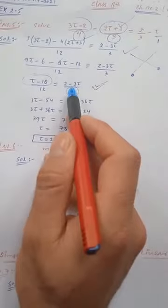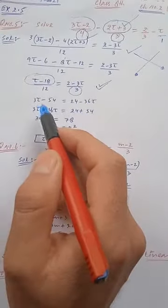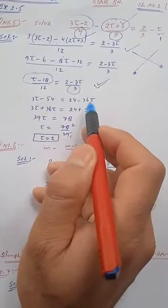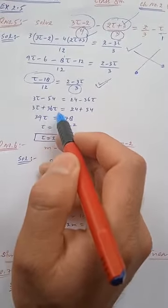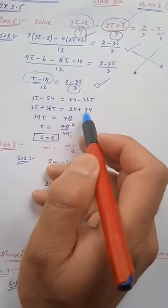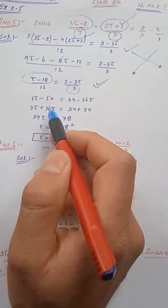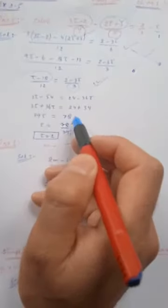Minus minus is there, that is why I am writing minus 12 × -3t, that is plus 36t. You can bring 36t to left hand side: 3t + 36t. You can transpose minus 54 to right hand side, it becomes plus 54. So 3t + 36t, that becomes 39t, is equal to 24 + 54, that's 78.